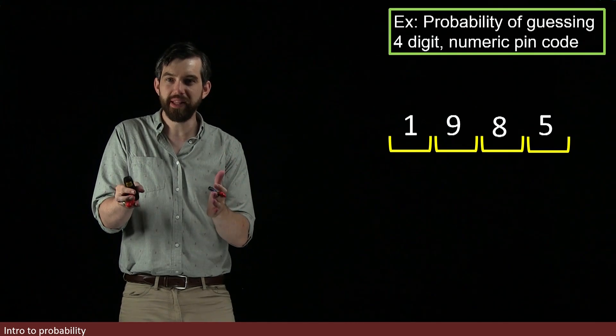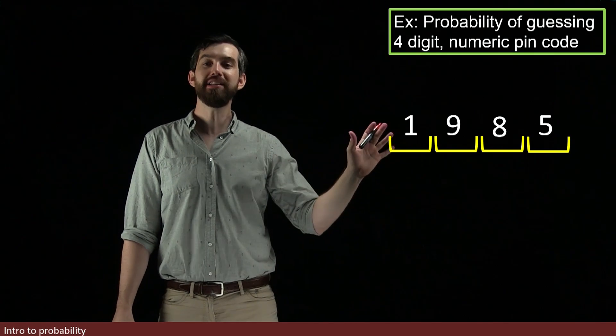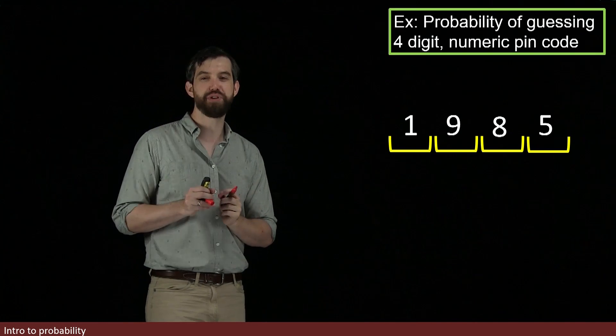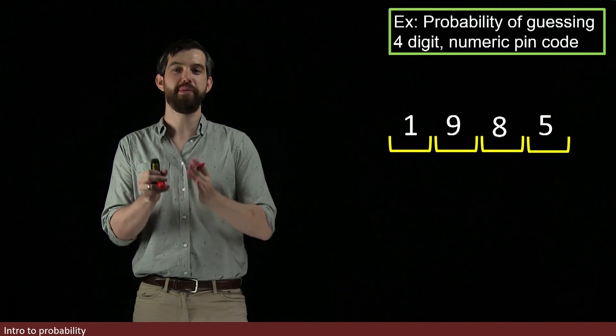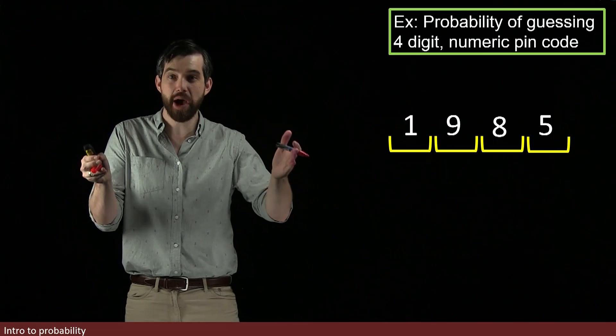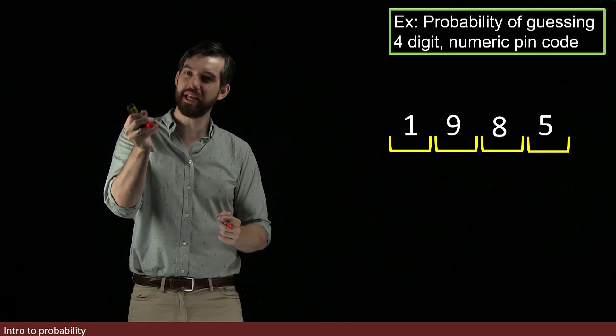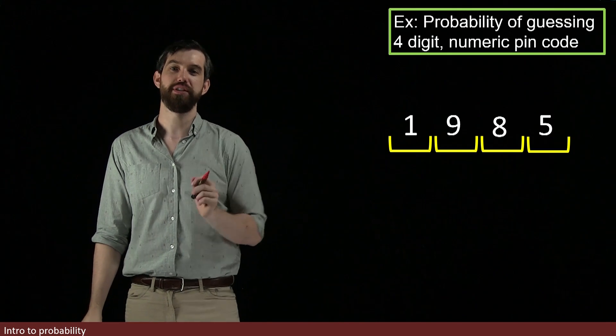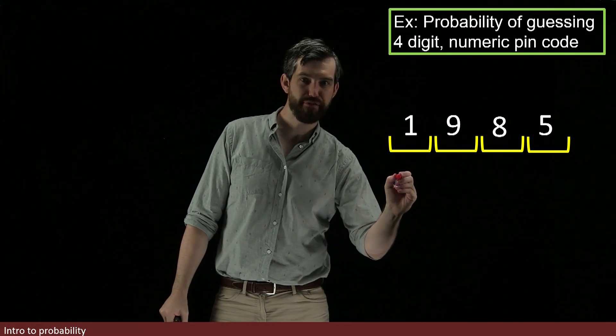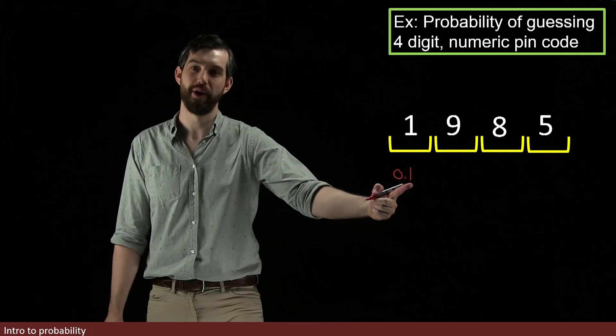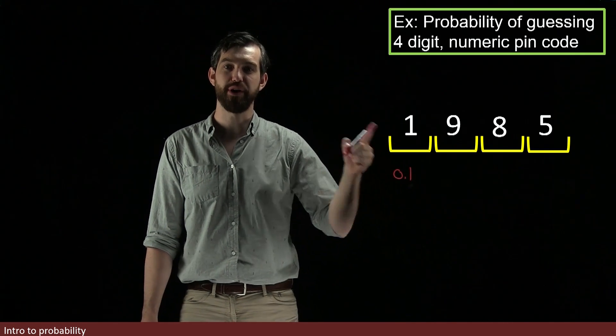So what's the probability of me guessing just the first number of your PIN code? I've got one attempt only, and we know it's some number between zero and nine, so there's ten numbers there. One number between zero and nine. And so I have only a 10% chance of guessing that first digit. So for the first one, I'm going to write down that we've got a 0.1 or a 10% chance of figuring out that first digit.